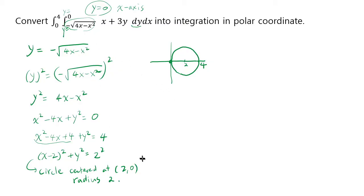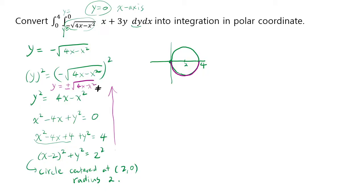However, going back to the original equation, y is the negative of a square root, so it will never be positive. This means it won't create the entire circle — only the bottom half. If you go backwards from the circle equation and solve for y, you get y equals plus or minus square root of 4x minus x squared. The plus gives the top half and the minus gives the bottom half. In our case it's just the minus, so it's only the bottom half circle.